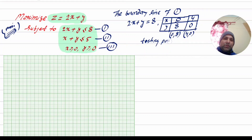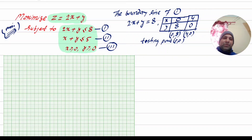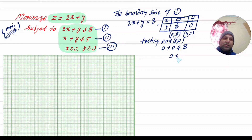I am going to keep testing point (0, 0). The point (0, 0) will pass the boundary line. We keep this testing point (0, 0): 0 plus 0 is less than or equal to 8, that is 0 is less than 8. This is true.